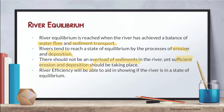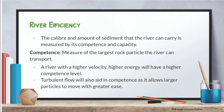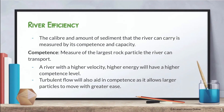Any erosion that occurs produces sediments, and these sediments should be deposited and accumulated somewhere so that the water can still flow very nicely in the river channel. River efficiency helps show whether a river is in a state of equilibrium. River efficiency is the calibre and amount of sediment a river can carry, and it is measured by two concepts: competence and capacity.